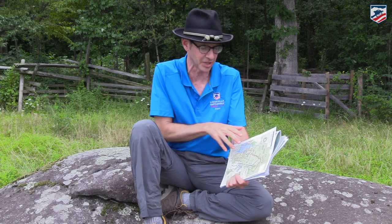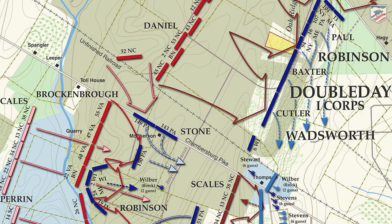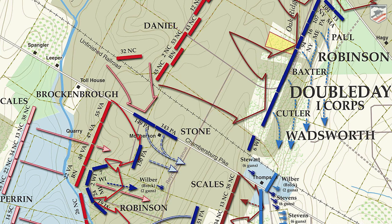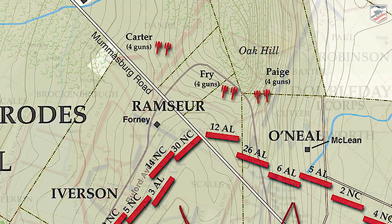But by far the most common type of American Battlefield Trust map is our battle maps — our static battle maps — and these can show a variety of features. I'm looking at one of Gettysburg right here. If you were to look at this particular map, you would see roads, fence lines, orchards, different types of fences, and contour lines.